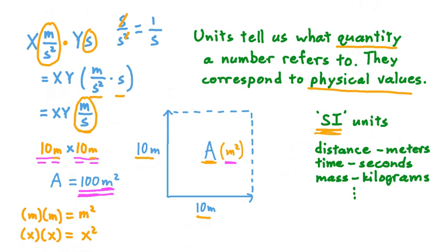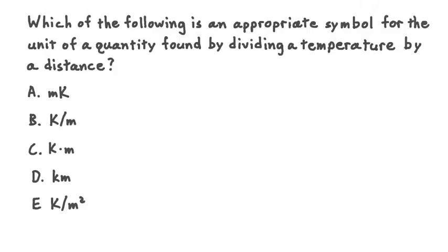Now that we've seen how units can combine together, let's get a bit of practice through an example exercise. Which of the following is an appropriate symbol for the unit of a quantity found by dividing a temperature by a distance?